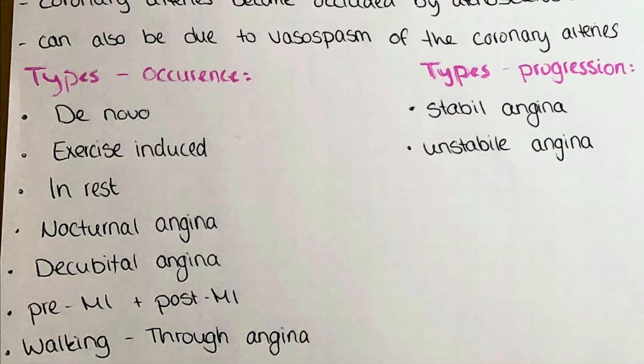Another interesting type of angina pectoris is called walking-through angina, where pain in the retrosternal area occurs only in the beginning of strenuous exercise but as the patient continues, the symptoms improve. An extensive anamnesis and conversation with the patient will help you to clearly determine which type of angina the patient experiences. Examinations such as ECG or stress tests are also useful to determine the degree and severity of the patient's complaints.